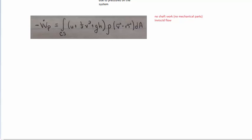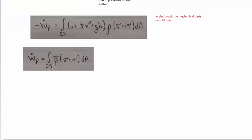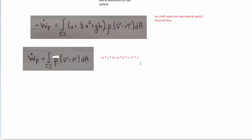How can we describe the pressure work term? Written as an integral, it's the pressure times the dot product integrated over the area. Using typical assumptions, this equals pressure times velocity times area — or rearranged, force times velocity, which we know is power. It has units of newtons times meters per second, the same as work per time.